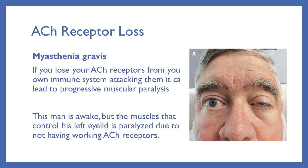Because there are so many steps and so much has to happen in the correct order for a muscle movement to occur, there are a couple of different ways we can mess this up. The first one is acetylcholine receptor loss, called myasthenia gravis. If you lose your ACh receptors from your own immune system attacking them, it can lead to progressive muscular paralysis. Your body releases the acetylcholine to communicate with the muscle, but because the receptors are gone, the muscle cell is not being activated. This man is awake, but he cannot control his left eyelid because those acetylcholine receptors have been destroyed.